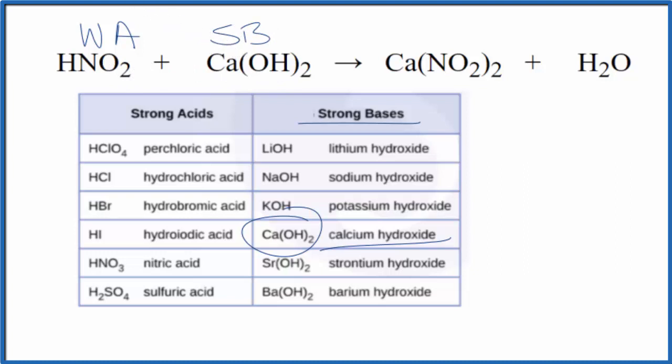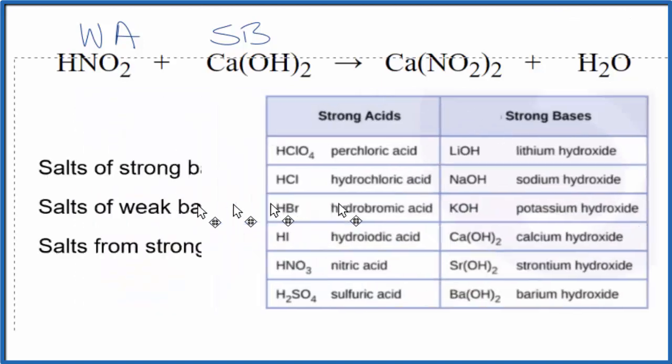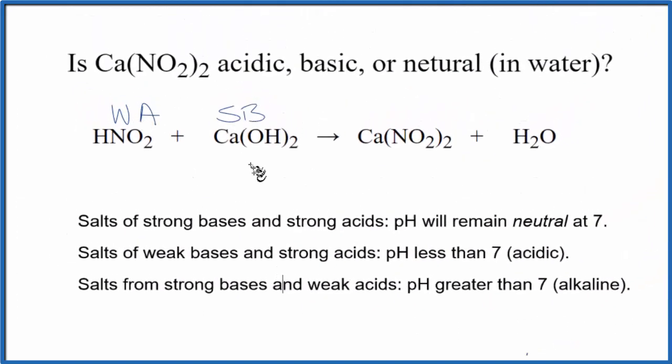We can figure out whether calcium nitrite is going to be acidic, basic, or neutral in water. So we have a weak acid and a strong base. Our rules tell us that the pH will be greater than 7, so greater than 7, that's alkaline.